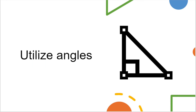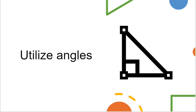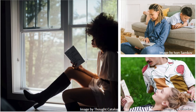Last but not least: utilizing angles. By changing the position of the text in relation to the reader's gaze, you can increase the ability to track and decrease eye strain. If you are unsure about what position works best, experiment! Try another one!